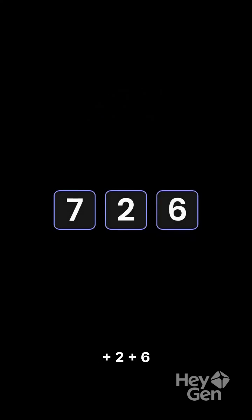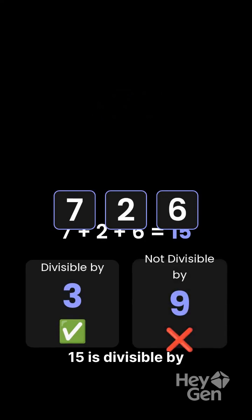Let's test 726. Adding its digits, 7 plus 2 plus 6 equals 15. 15 is divisible by 3, but not by 9.